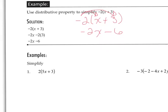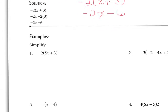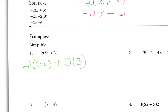We're going to use distributive property on these examples. We use it because the terms inside the parentheses are not like terms — we can't add 5x plus 3 to get rid of the parentheses. So we're going to distribute the 2: 2 times 5x plus 2 times 3. That comes out to be 10x plus 6.